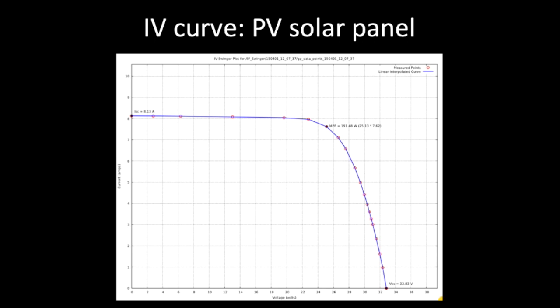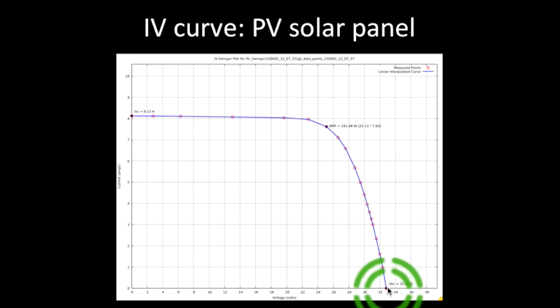I'm going to go back to that drawing and show you those things. This point here is the short circuit current, ISC — in this case, 8.13 amps. This point down here is the open circuit voltage, VOC — that's 32.83 volts. And then this point is the maximum power point, which is 191.48 watts. The maximum power point is very important because it tells us how much power the solar panel is capable of producing if it's loaded optimally.